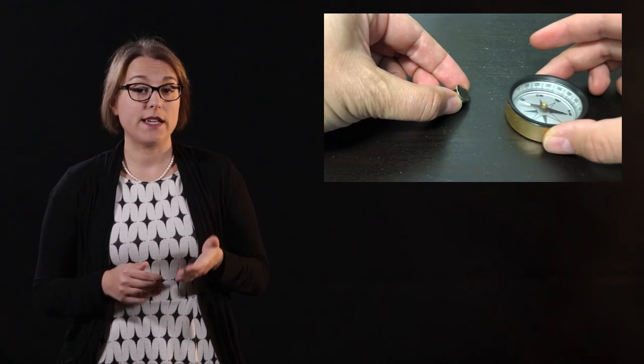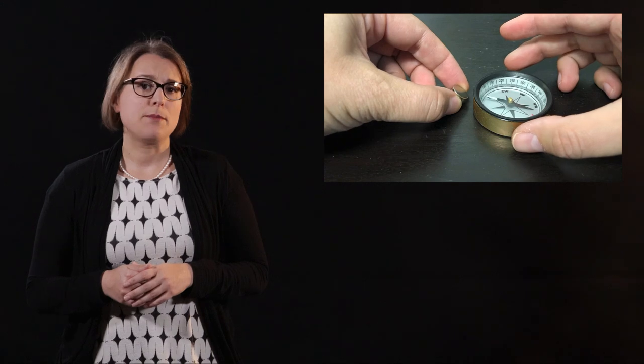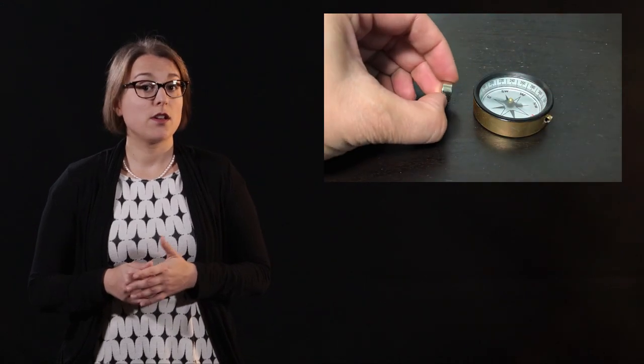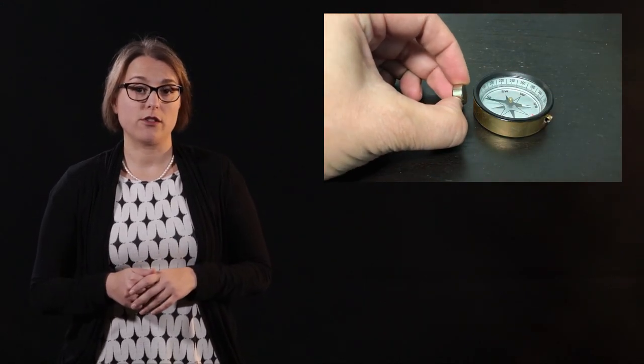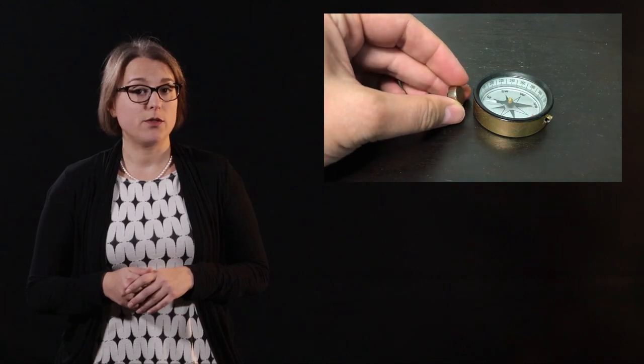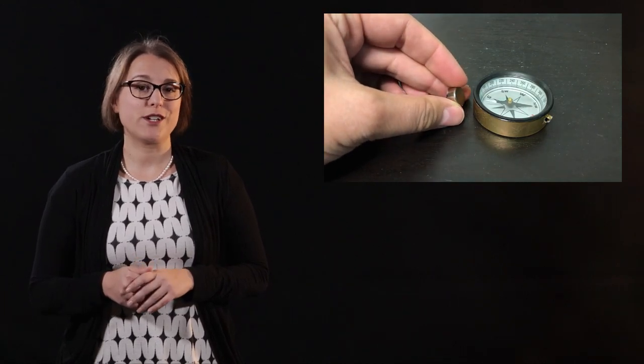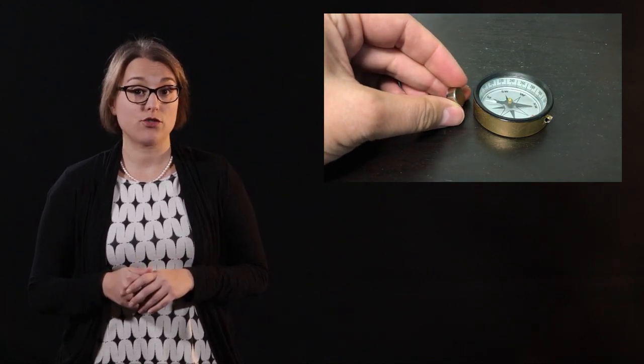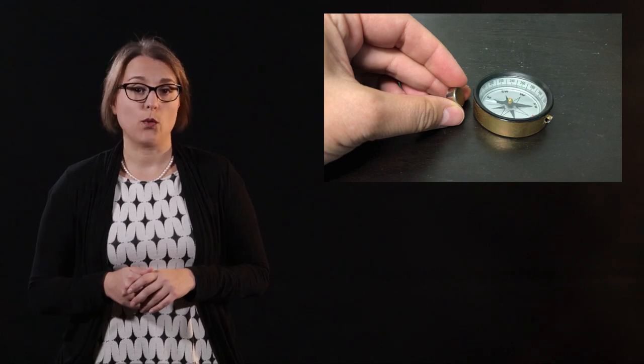A disc magnet is a short cylindrical magnet. The poles of the disc are located at the top and bottom of the disc. Many rare earth magnets, so called because they are made of rare earth elements, are shaped into disc magnets. These rare earth magnets are extremely strong and care should be taken when handling them.